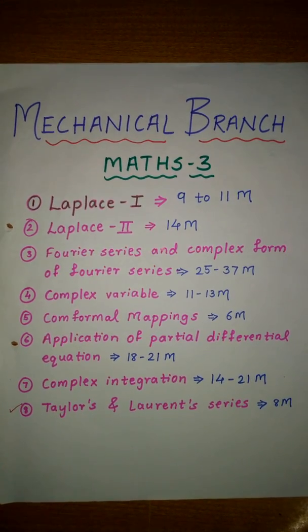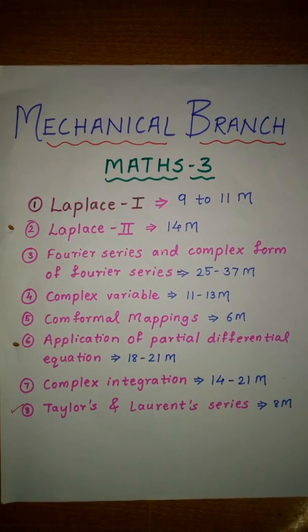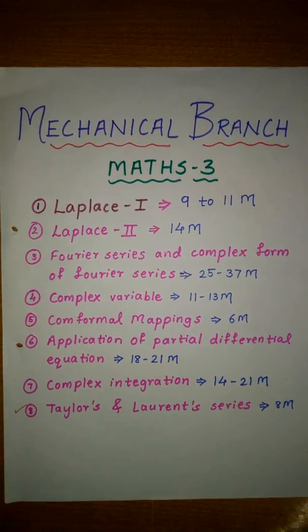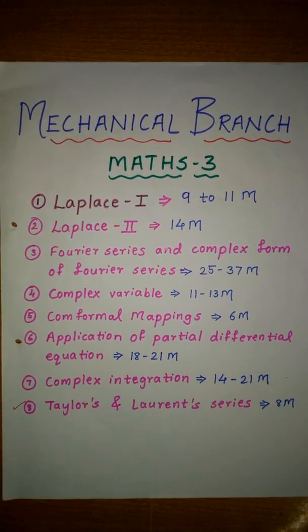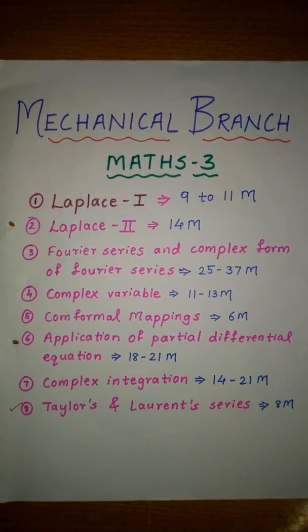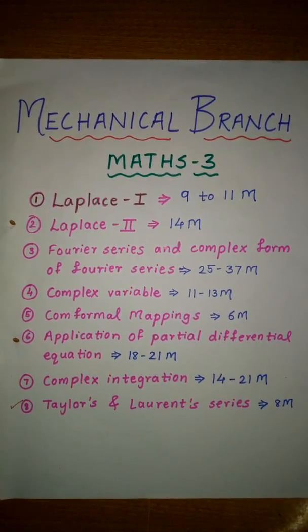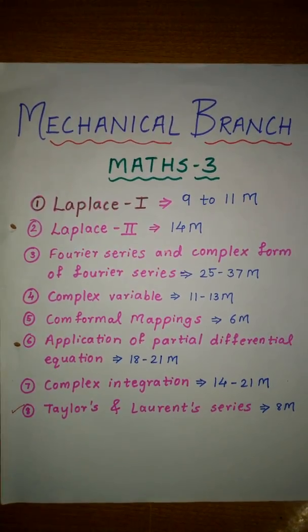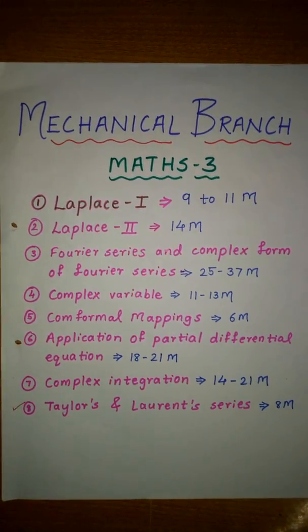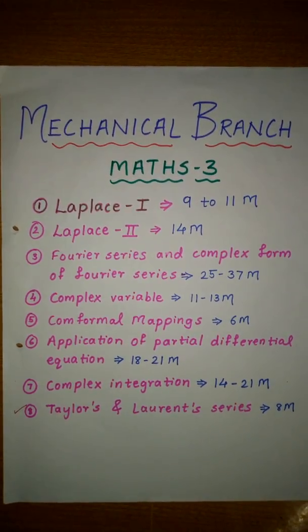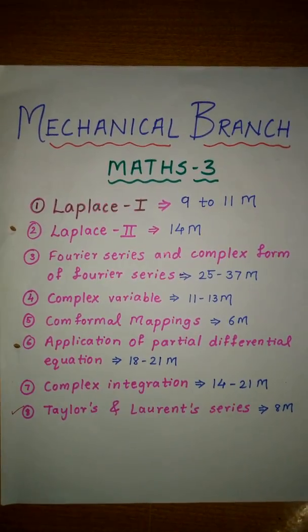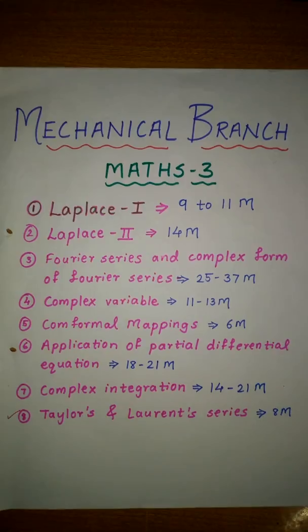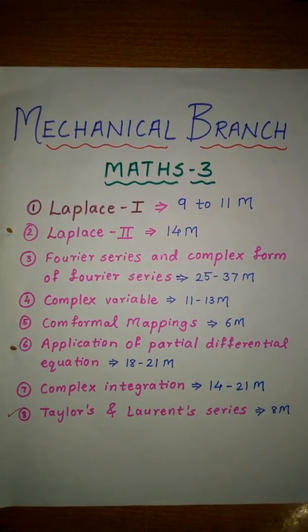Starting with the syllabus of M3: Laplace 1 comes for 9 to 11 marks, Laplace 2 comes for 14 marks, the Fourier series and complex form of Fourier series comes for 25 to 37 marks in the paper — the highly weighted chapter. Complex variable comes for 11 to 13 marks.